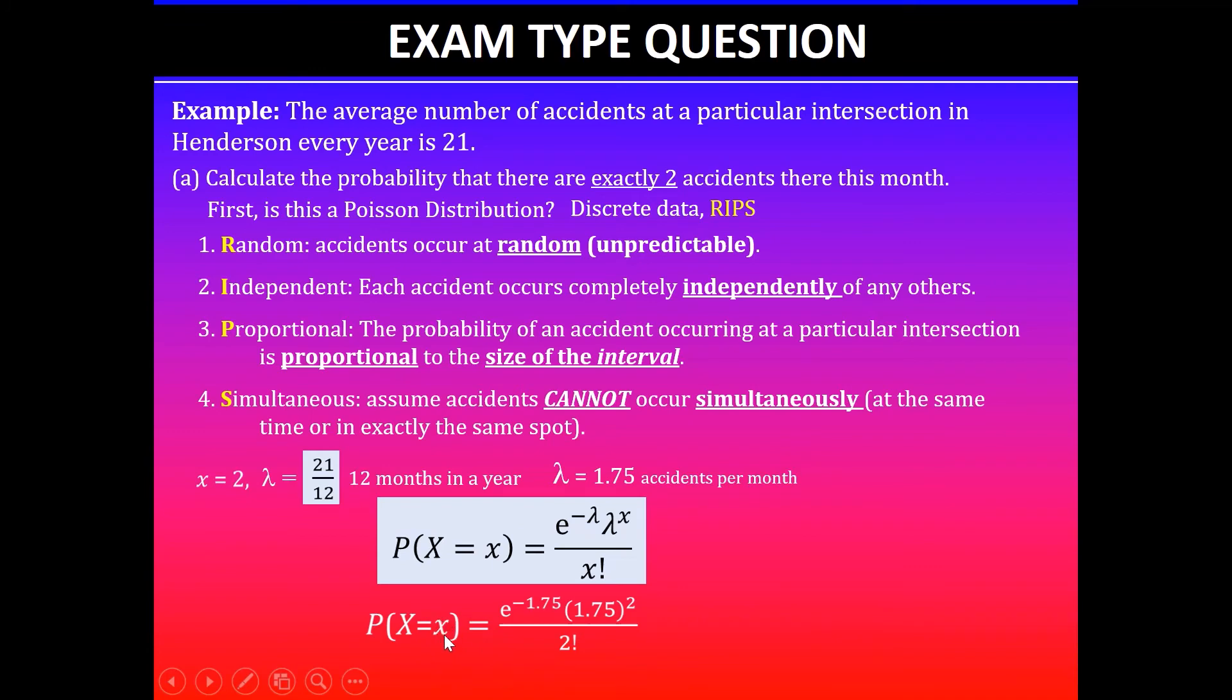So we'll substitute this: our x value is 2, so we replace the x's by 2, and the lambda value is 1.75. So e to the power of minus 1.75 times 1.75 squared divided by 2 factorial, and that gives you 0.2661. And then we answer the question in context.